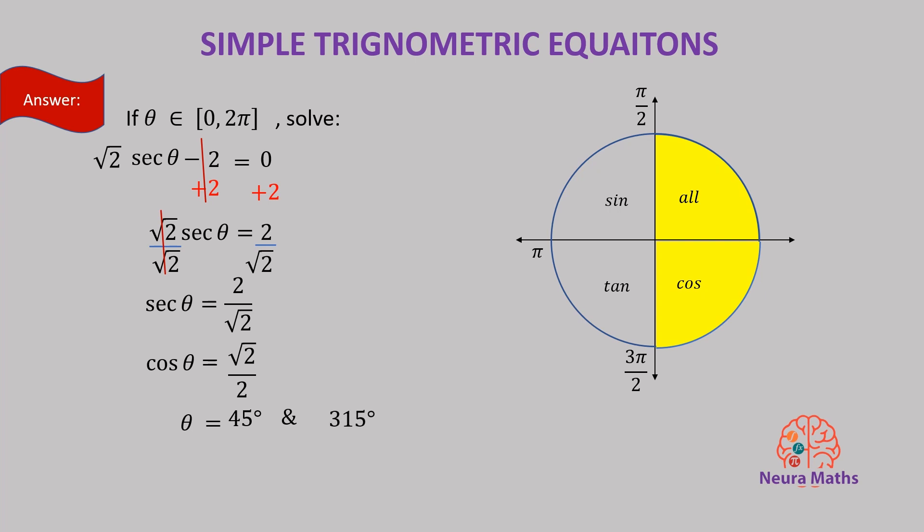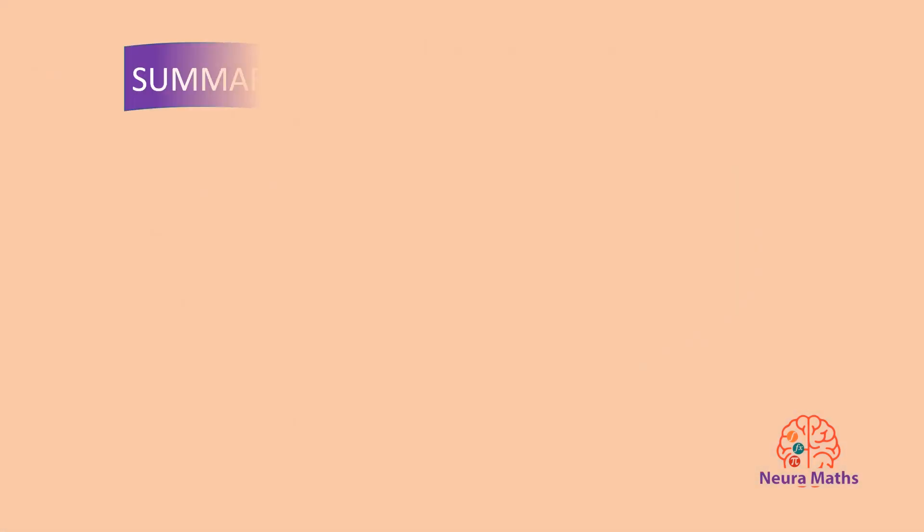To sum up, in trigonometric equations, trig functions play the role of a variable. Solving it means not only to isolate the trig function alone, but also to find the angle that makes it true. Theta has two values as it exists in two quadrants.